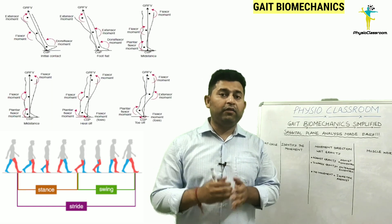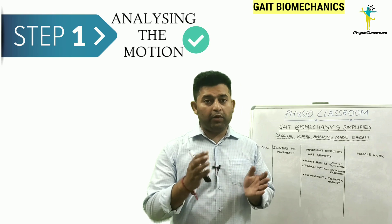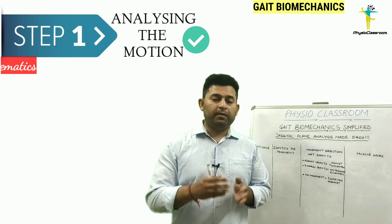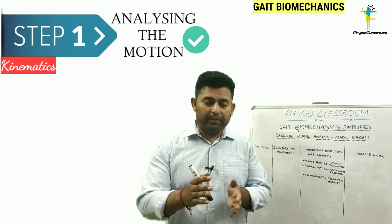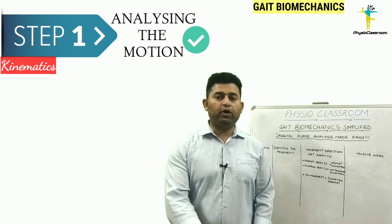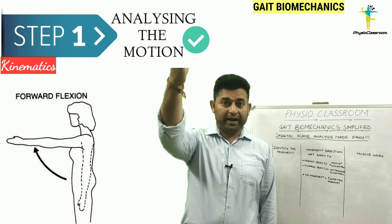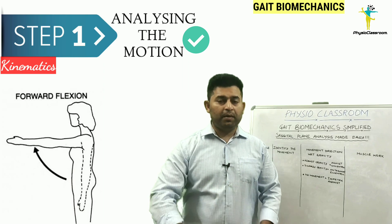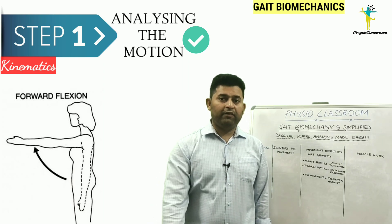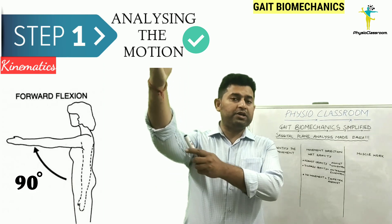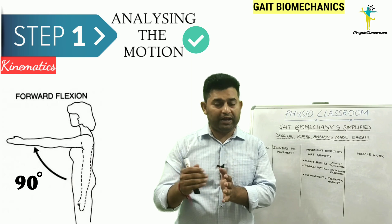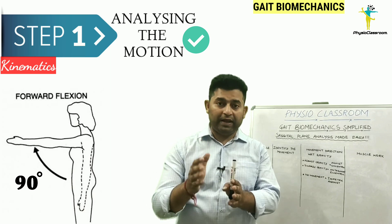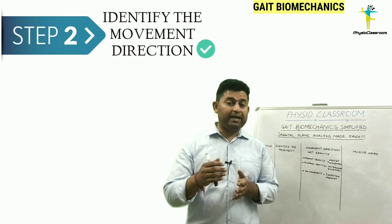The first step in learning biomechanics is always to analyze the motion, or do motion analysis. Motion analysis is also referred to as kinematics. Let's take a simple example: suppose I want to lift my hand into forward elevation. I have to observe the movement that has taken place. In the starting position my hand was neutral and beside the body. When I performed this movement, I brought my shoulder into 90 degrees of flexion. So my motion analysis tells me that the shoulder has moved into 90 degrees of flexion.